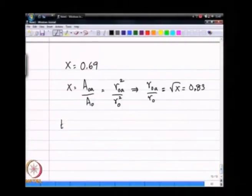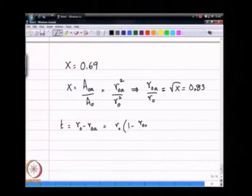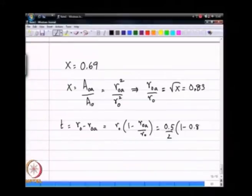If I want to calculate the film thickness t is r0 minus r0a. I will just divide and multiply by r0 and this is what I have. r0 is 0.5 mm divided by 2 times 1 minus 0.83.